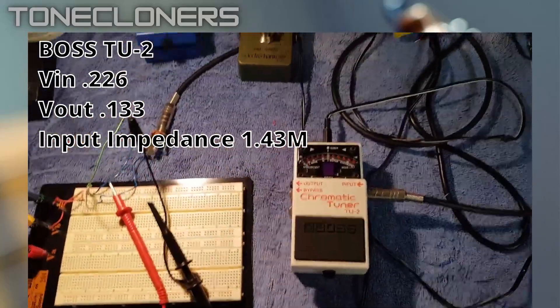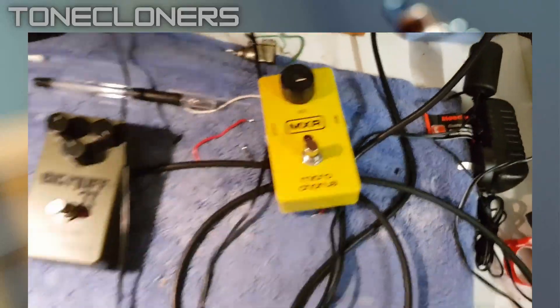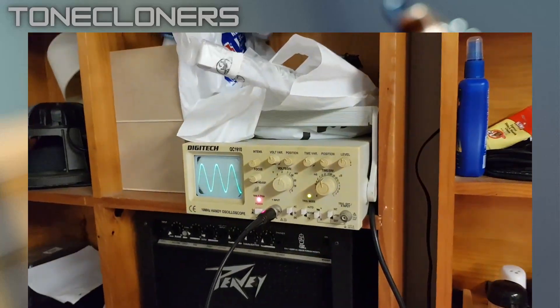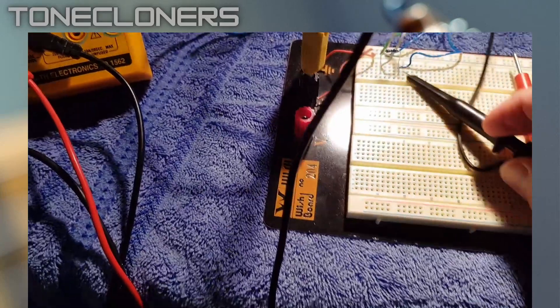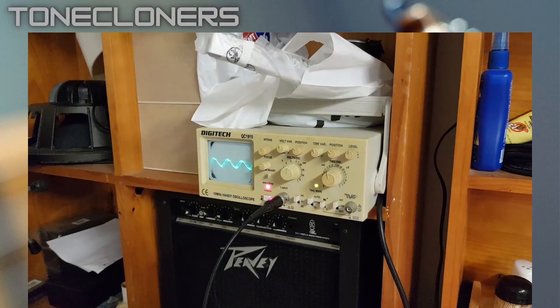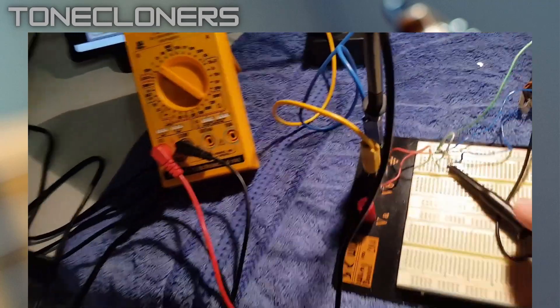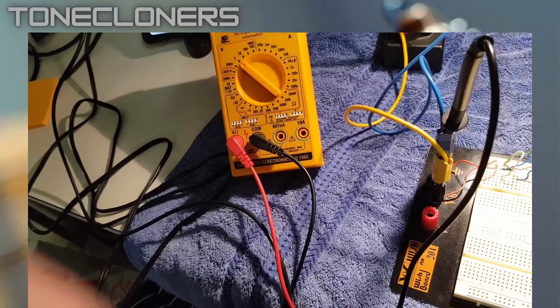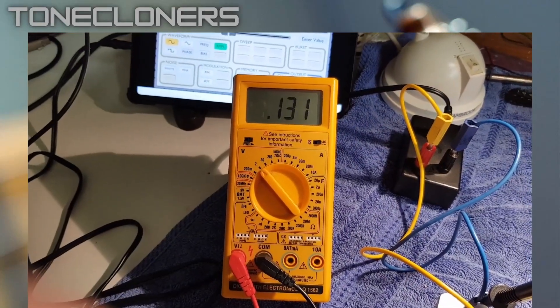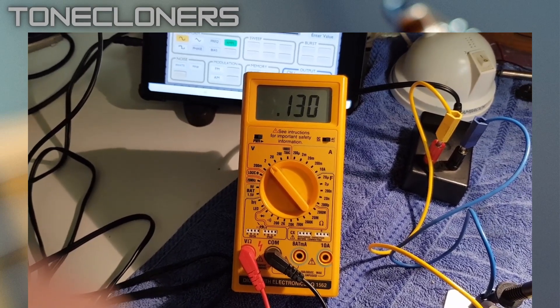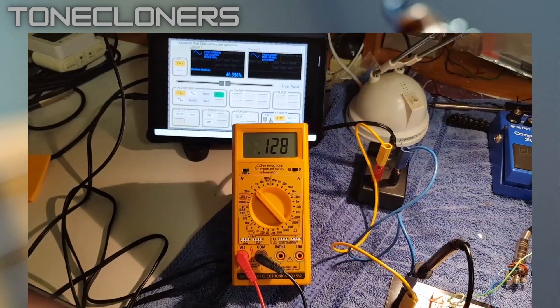OK, let's do the Microchorus just because it's here. Microchorus is hooked up. Here's our input. Let's check our output. There's our output. Again, it's jumped down about roughly half. Let's check that on the multimeter. Again, 0.132 volts. And the calculator says...